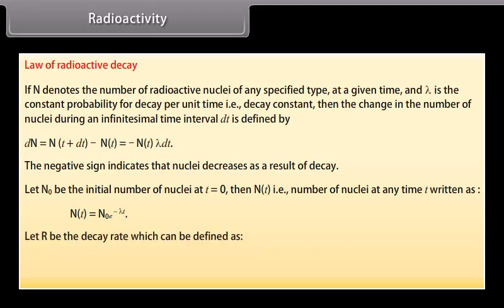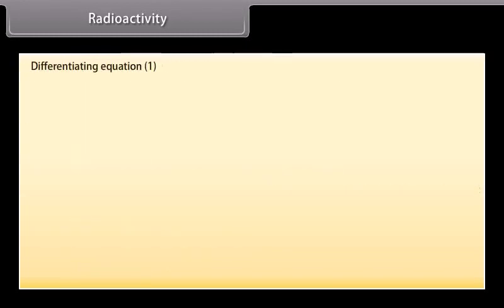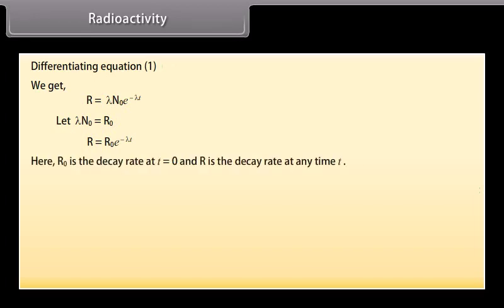Let R be the decay rate which can be defined as R is equal to minus dN by dT. Name it as equation 1. Differentiating equation 1, we get R is equal to lambda N not e raised to the power minus lambda T. Let lambda N not equal to R not. R is equal to R not e raised to the power minus lambda T. Here R not is the decay rate at T is equal to zero, and R is the decay rate at any time T.